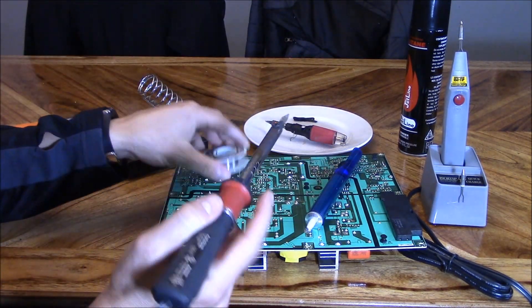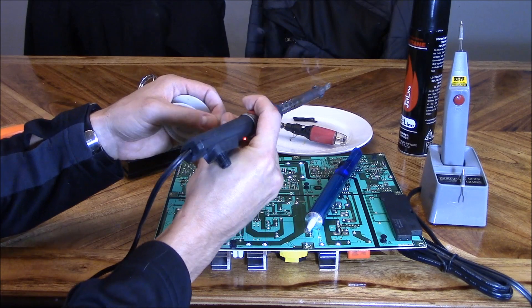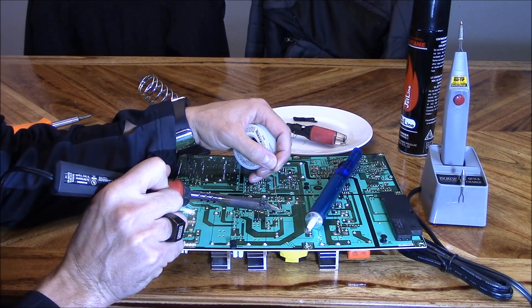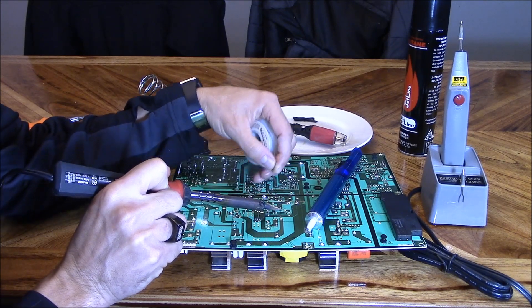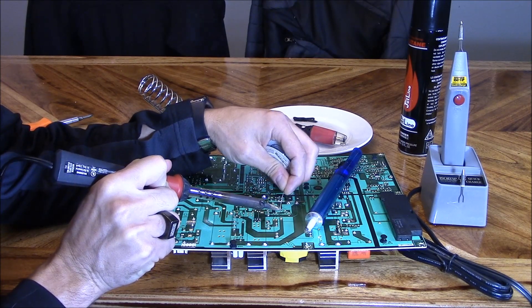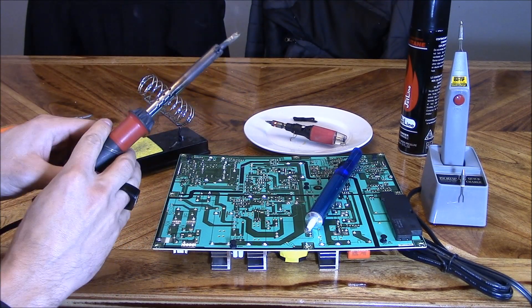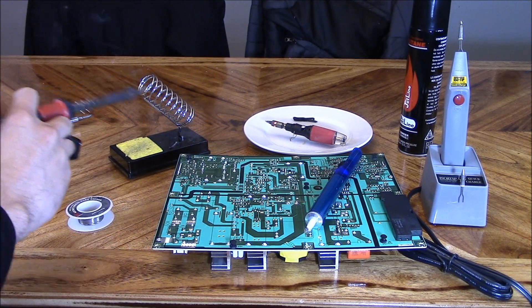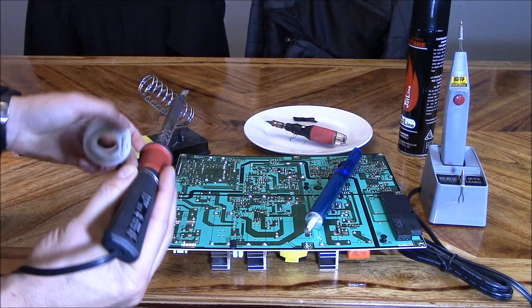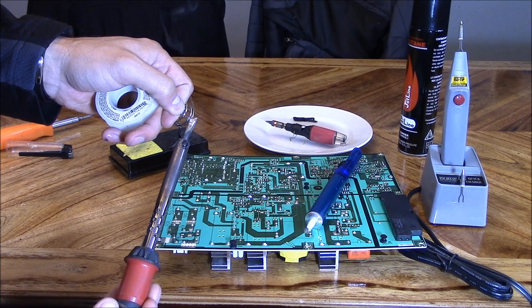This one takes the longest to heat up. This is about a full minute and a half to heat up. Just about ready. Let's go ahead and heat up this pin. There it goes. It's working pretty good now. I'm going to go ahead and clean it on the wet sponge and re-tin it. There we go.